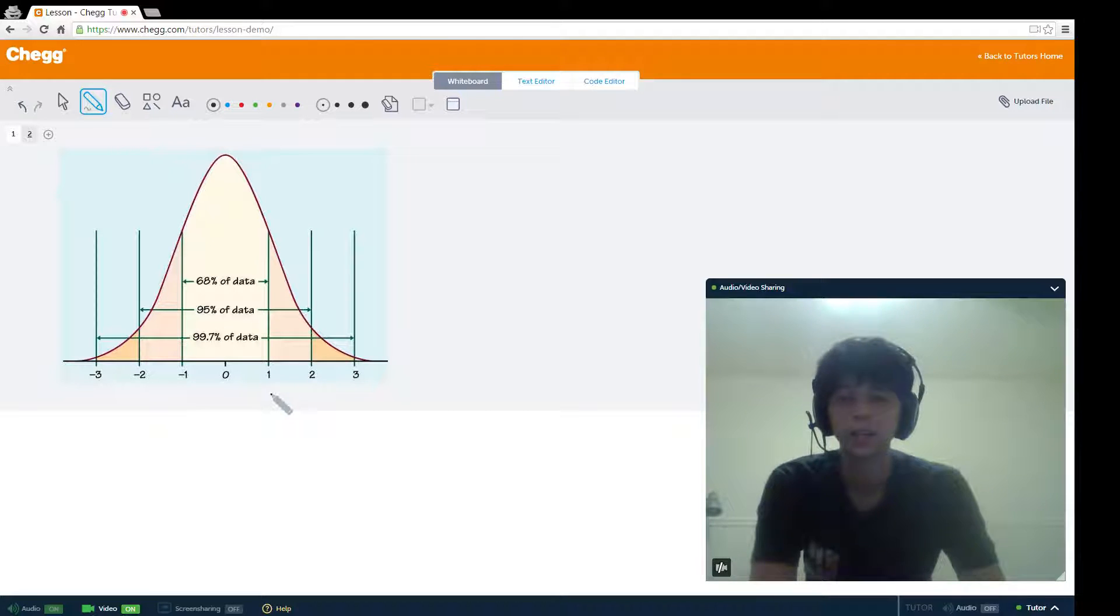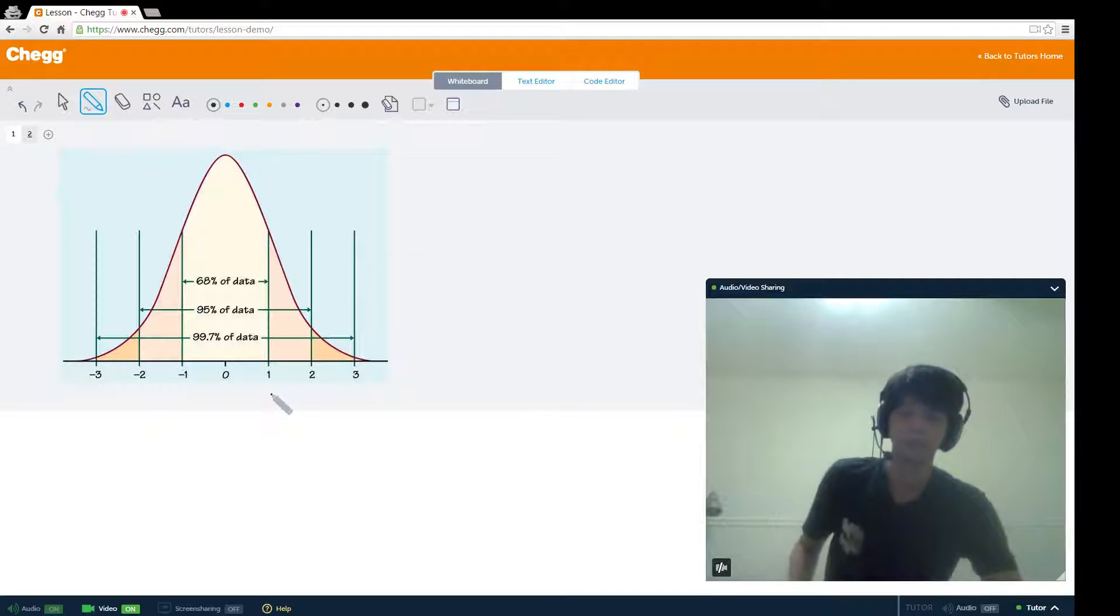If you go from a z-score of negative two to a z-score of two, that will contain 95% of your data. And if you go from negative three to a z-score of three, that would be virtually all of your data, 99.7% of your data.